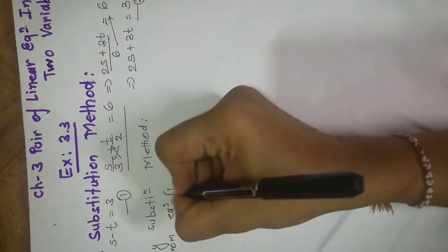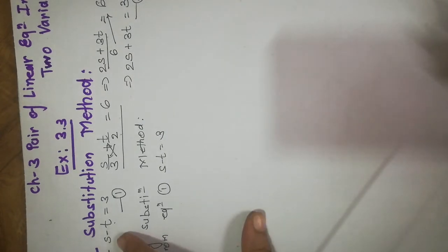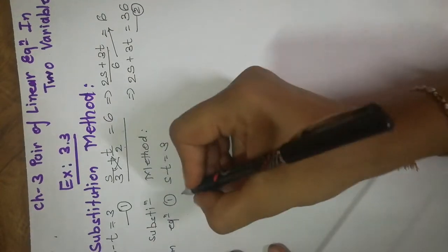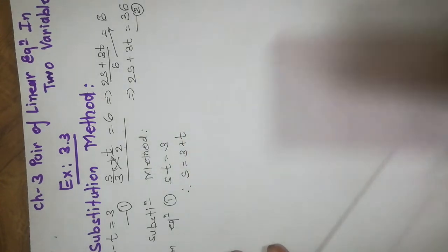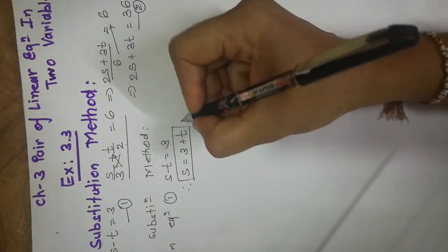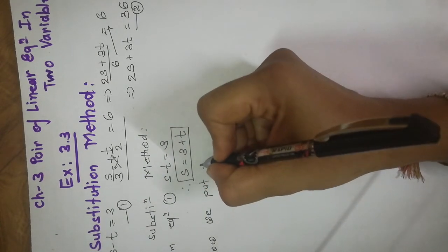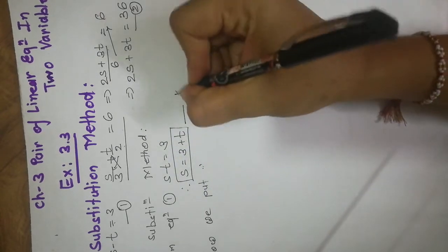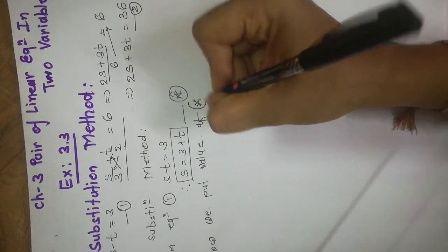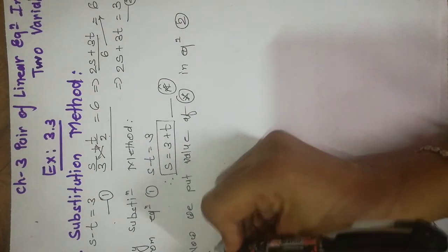s minus t is equal to 3 — this is our first equation. I can see that from this equation I can find the value of a variable more easily than the second equation. Therefore, s is equal to 3 plus t. I can find the value of one variable in terms of the second variable. We give this equation the name 'equation star,' and we put the value of s from equation star into equation 2, the remaining equation. The equation then becomes in one variable only.